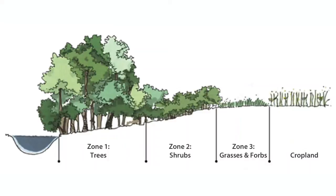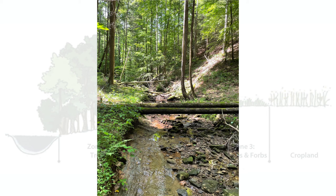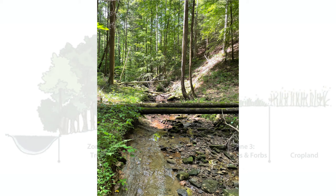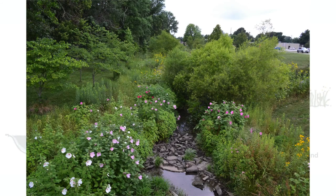Buffer zones often consist of three zones of planted native species. Zone one includes moisture-tolerant plants, often trees, that provide shading to the stream. This shading helps regulate water temperature and keep temperatures at optimal levels for aquatic life. Zone two often includes shrubs that are moisture-tolerant, but not necessarily wetland plants.